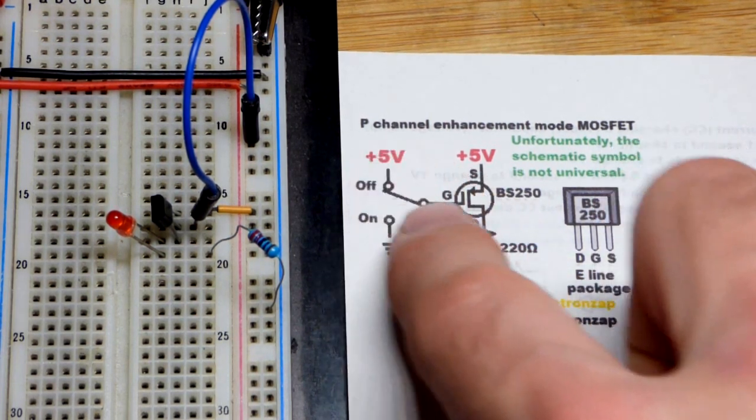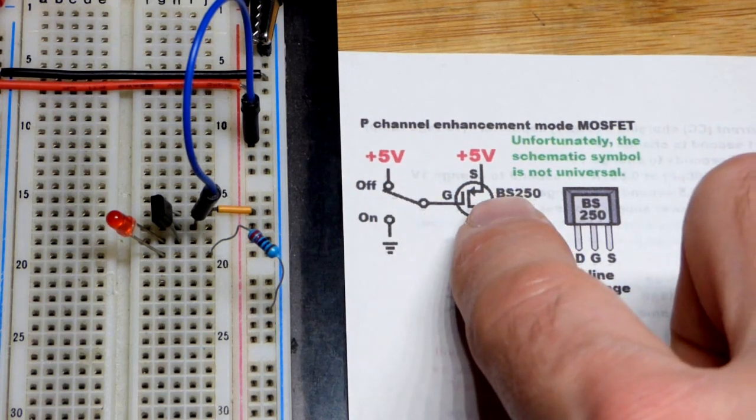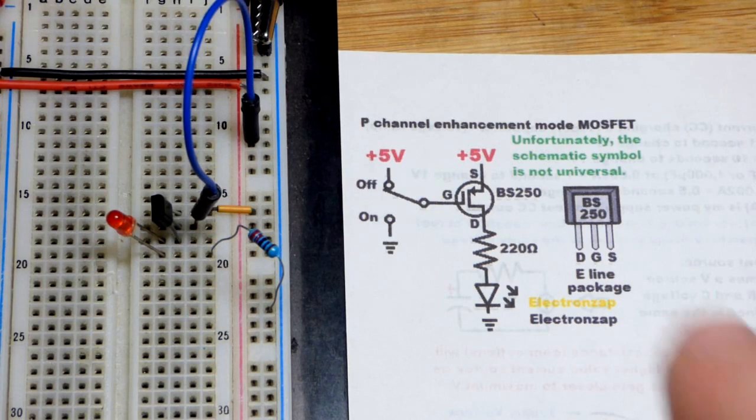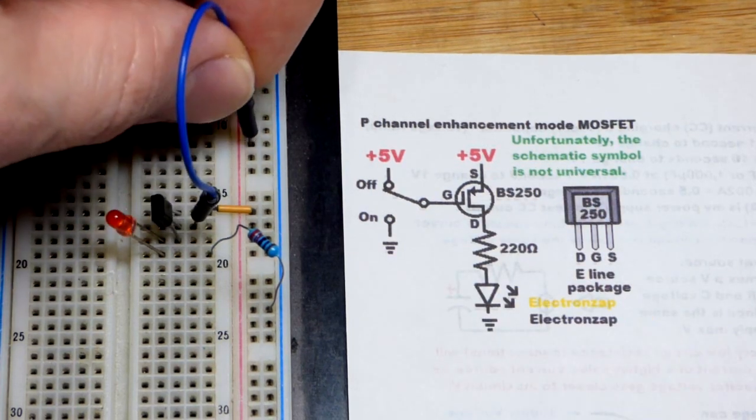So we get positive to the gate, that makes the channel more negative. Since it's P-channel, it wants to be more positive to conduct. So we're going to do that now.